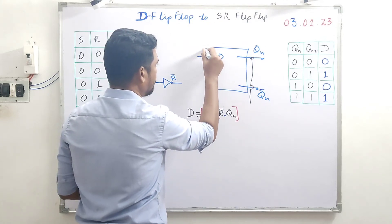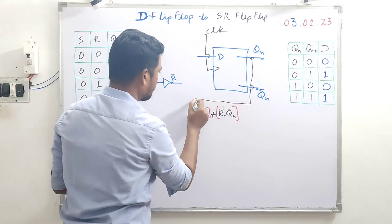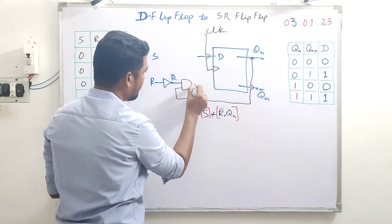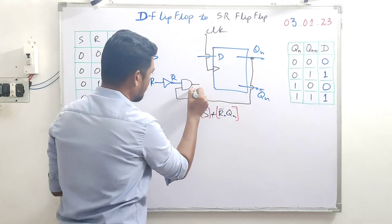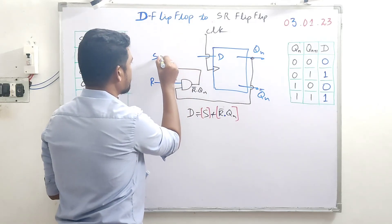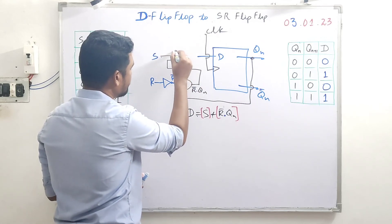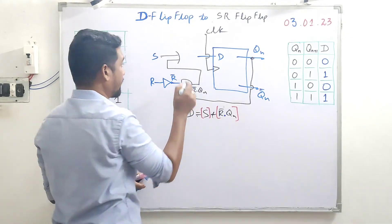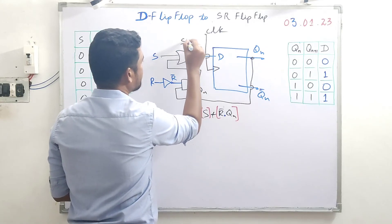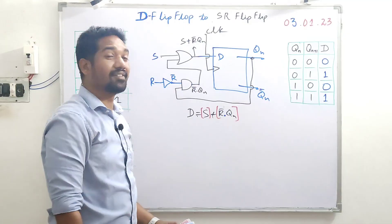We have a clock connected to D as well. The AND gate takes R̄ and Qn as inputs and produces R̄·Qn. Then S and the output R̄·Qn are given to an OR gate, and the output of that OR gate is S + R̄Qn, which equals D — the input of the D flip-flop. This is the final conversion of SR flip-flop to D flip-flop. Thanks for watching.